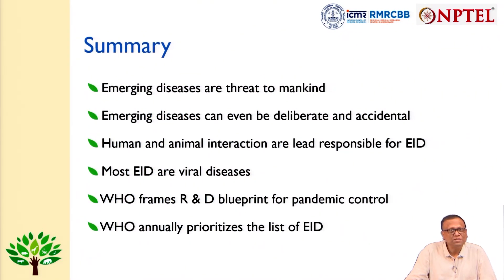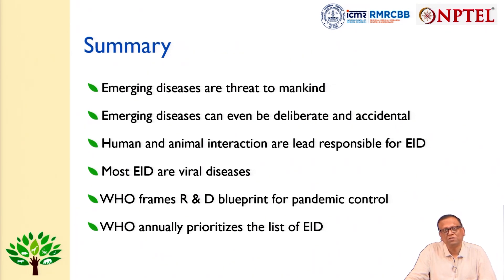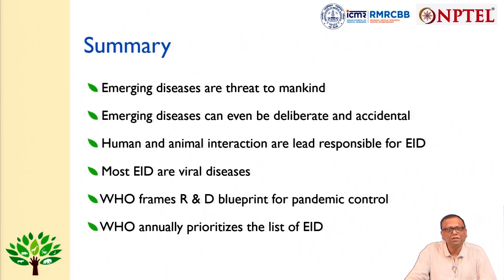In summary, emerging diseases are a threat to humankind; they can be deliberate or accidental; human-animal interactions are the leading responsible causes for emergence; and most emerging diseases are of viral nature. WHO has framed the R&D Blueprint for pandemic control and annually prioritizes the list of emerging infectious diseases, with countries also doing so according to their own vulnerability and priorities.